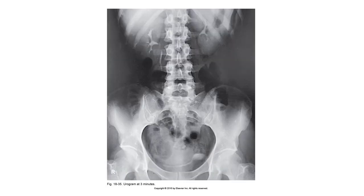Intravenous urography is ordered to evaluate abdominal masses, renal cysts, and tumors. Other things commonly visualized are urolithiasis, or stones, of the urinary tract or kidneys.